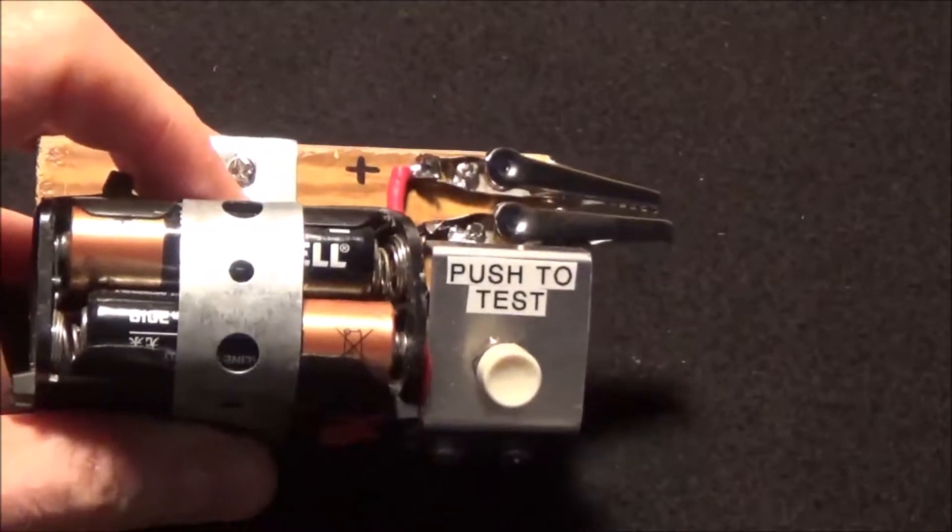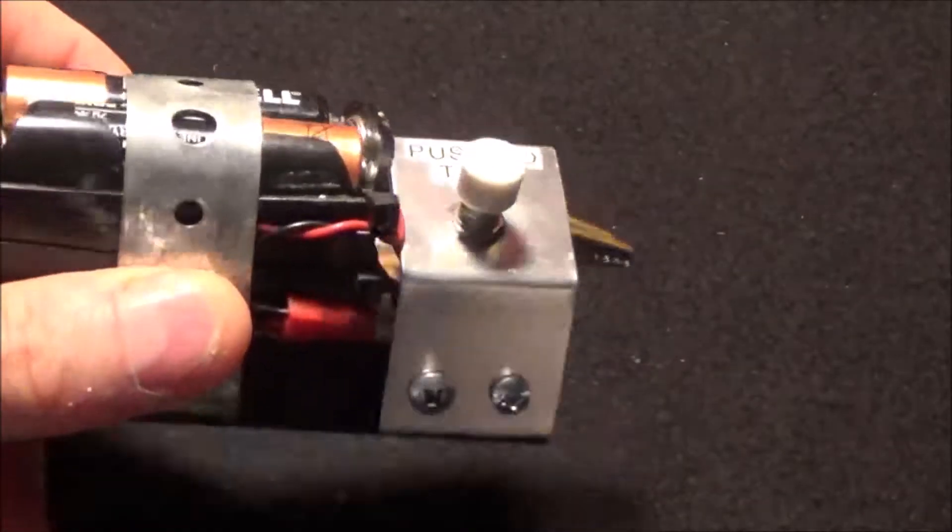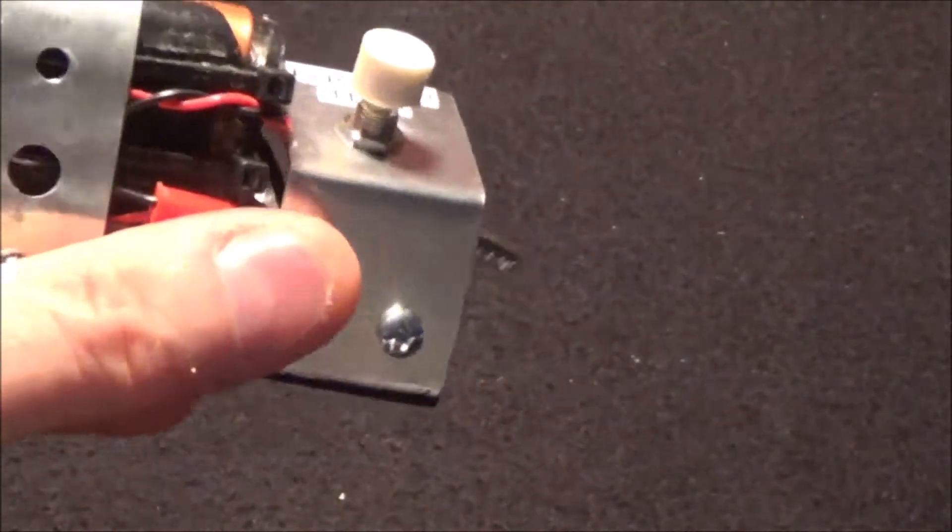So I'm powering this with four 1.5 volt AA batteries, it gave me 6 volts, and I got a little current limiting resistor in here that you can't see behind this piece of aluminum.